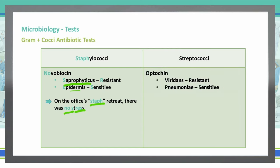On streptococci, we can use optochin to determine which bacteria we are dealing with. If a bacterium is resistant to optochin, that is going to be Strep viridans. Whereas if it is sensitive to optochin, that will be Strep pneumoniae. A way to remember this is using OVRPS — O for optochin, V for viridans which is resistant, and P for pneumoniae which is sensitive.